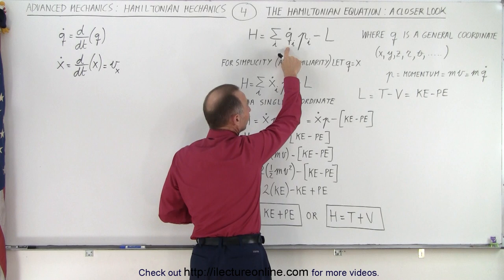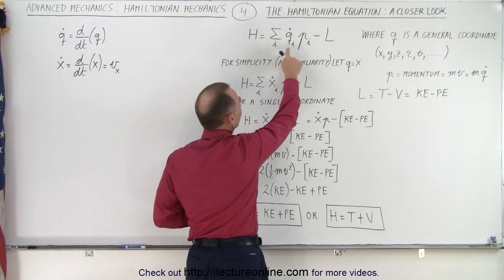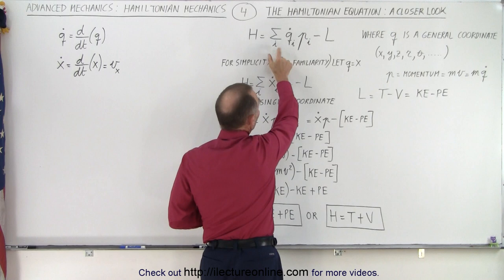We have a general position variable, and then we take the time derivative. Q dot is the time derivative of the position variable, which turns it into the velocity in that direction. Then we multiply that times the momentum, m times v or m times Q dot.